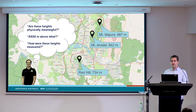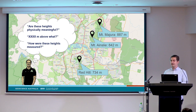To name just three, we have Red Hill, which is about 734 metres high, Mount Ainslie at 842 metres, and Mount Majura at 887 metres. These are all lovely spots, but as a geodesist, when I see a sign with a height on it, I can't help but ask questions like: is this height physically meaningful, or 887 metres above what, and how is this height measured? Much to my wife's annoyance.